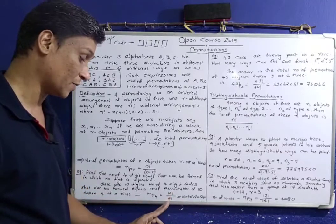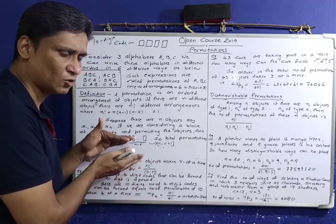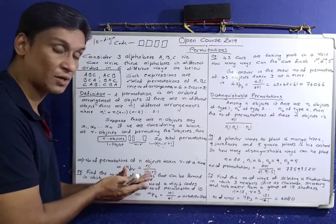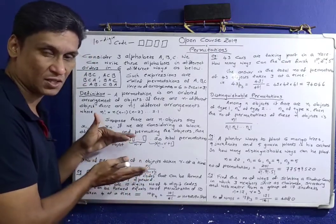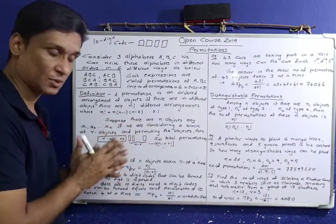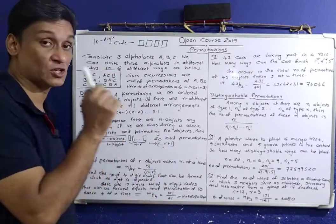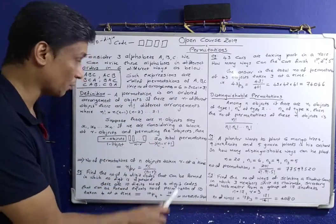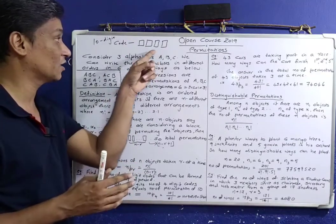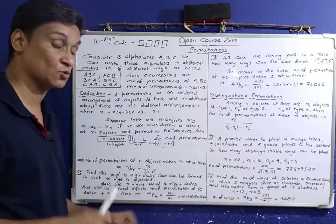10 factorial divided by 6 factorial simplifies to 5040. So using the formula nPr equals n factorial divided by n minus r factorial: permutations of 10 digits taken 4 at a time gives 10P4 equals 5040.